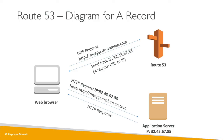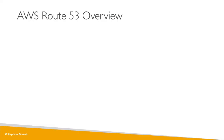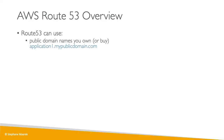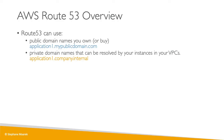This is a simplified version of how DNS works — first a DNS request, then an HTTP request. Route 53 can use public domain names that you own or buy, for example application1.mypublicdomain.com. It can also use private domains that can only be resolved by your instances within your VPC, such as application1.company.internal — that's not purchasable on the internet and only your applications can resolve it.